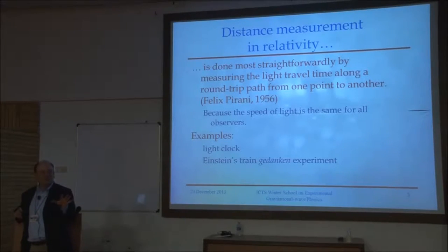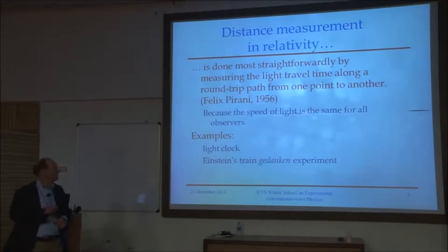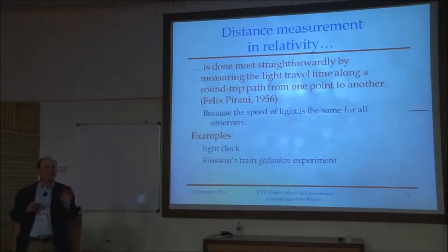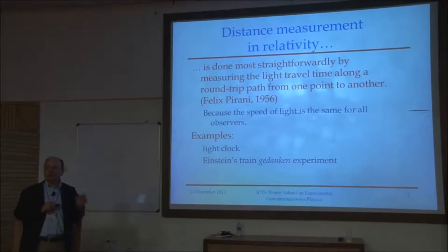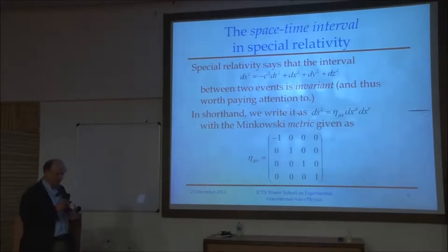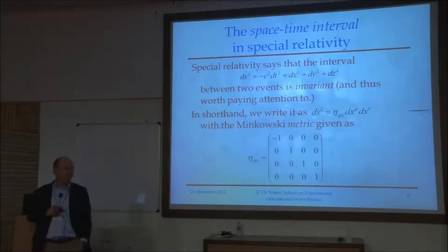Where did Ray get his relativity? Where did he understand that the interferometer would work if only he could conquer this list of ten noise sources? It was from having read a paper of Felix Pirani's in 1956. That bit of history is almost lost, and it's one of my campaigns to resurrect our appreciation for this work. I'm going to walk you through the calculation that Ray did following Felix's paper.